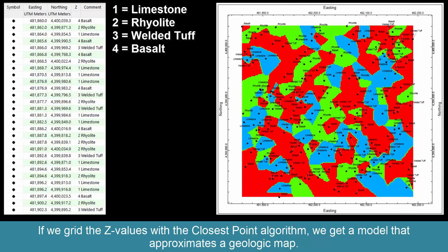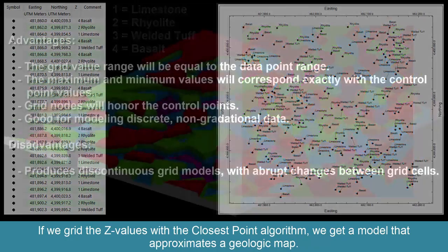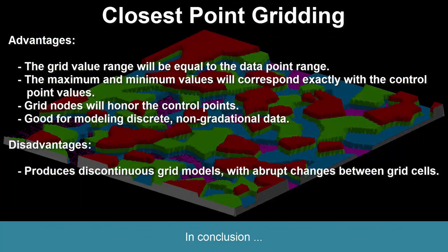If we grid the z values with the closest point algorithm, we get a model that approximates a geologic map. Advantages: the grid value range will be equal to the data point range, the maximum and minimum values will correspond exactly with the control point values, grid nodes will honor the control points, and it's good for modeling discrete non-gradational data. Disadvantages: it produces discontinuous grid models with abrupt changes between grid cells.